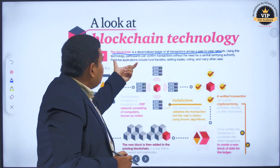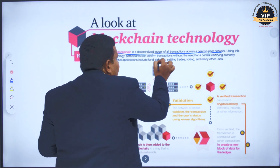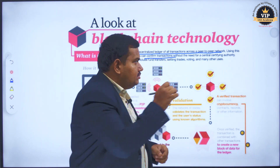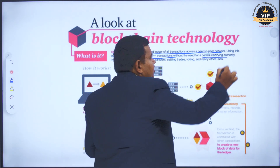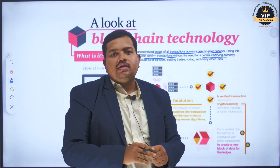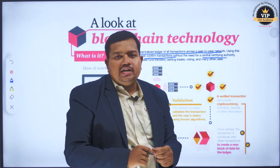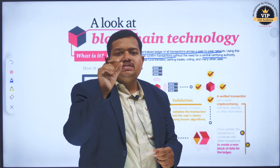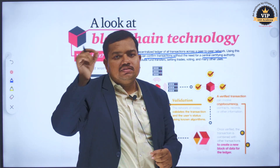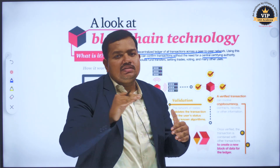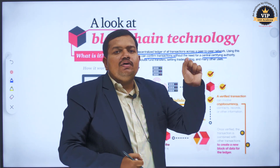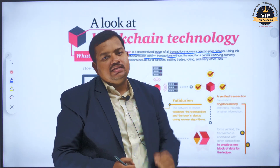Using this technology, participants can confirm transactions without the need of a Central Certifying Authority. In UPI's case, the Central Certifying Authority is NPCI. With blockchain, there is no need for a central certifying authority. Blockchain is the technology that helps in doing transactions directly.